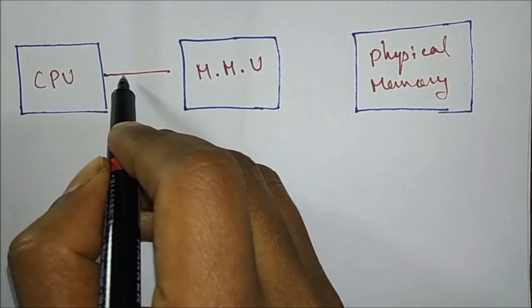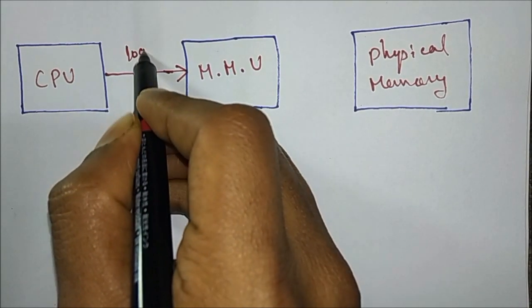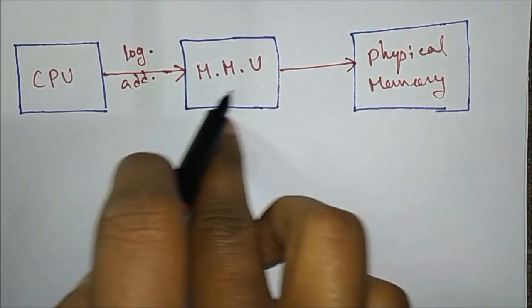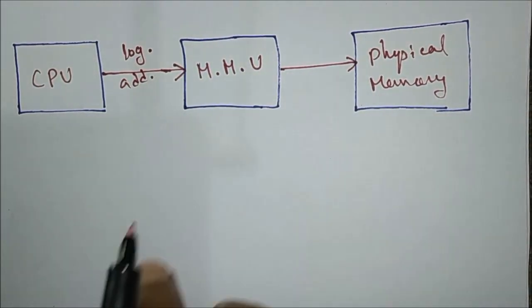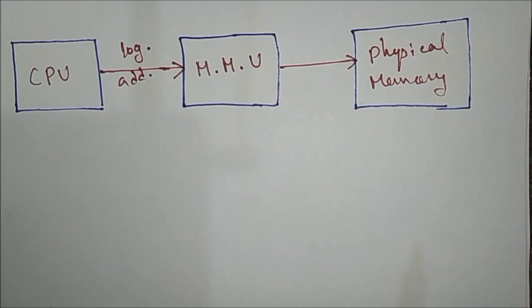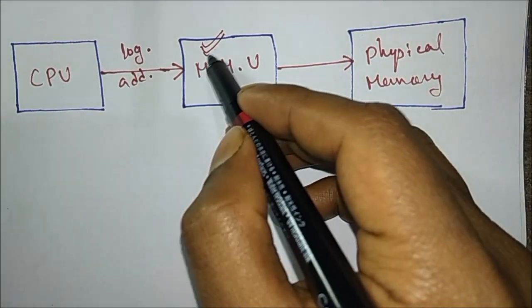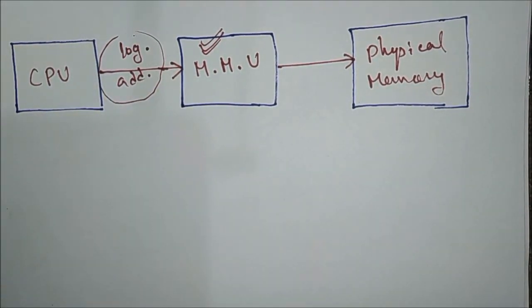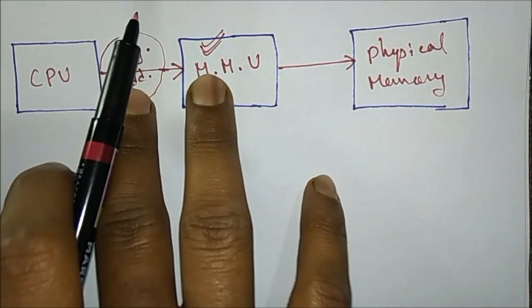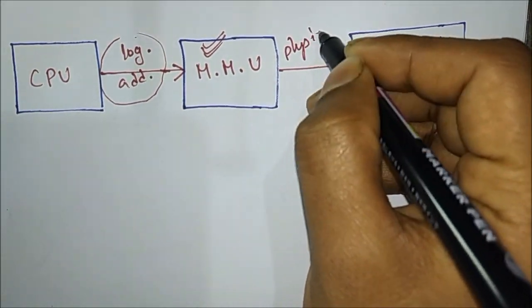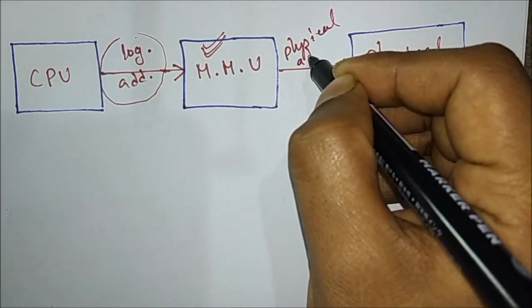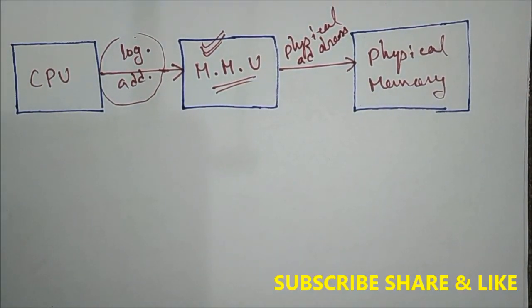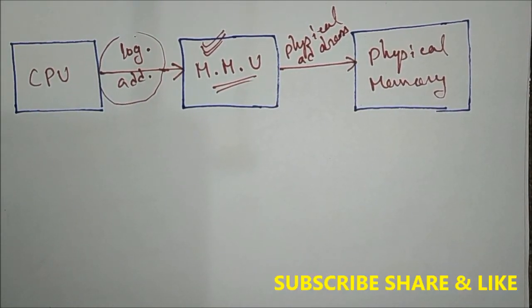What the CPU does is generate the logical address. The memory management unit then converts the logical address into a physical address. So the memory management unit plays a key role here — the addresses generated by the CPU are converted by the memory management unit into physical addresses. This is the key role of the memory management unit. Thanks for watching.